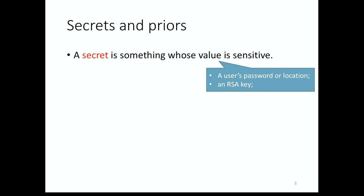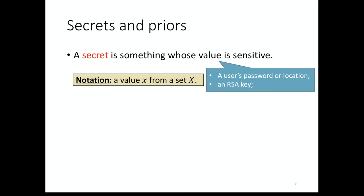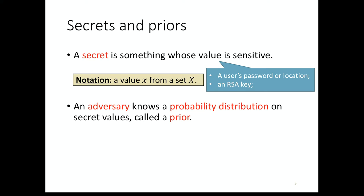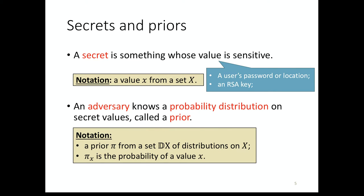First of all, what is a secret? In this framework, we try to be very abstract. A secret can be anything: a password, a location, a cryptographic key — any kind of value considered sensitive. We have a set of values for this secret. We assume the adversary has some guess about the secret represented as a probability distribution, which we call the prior — what the adversary knows before observing anything about the system. I represent the prior with the letter pi.